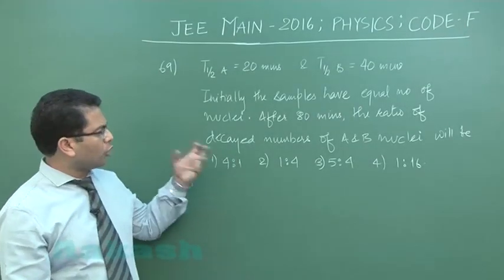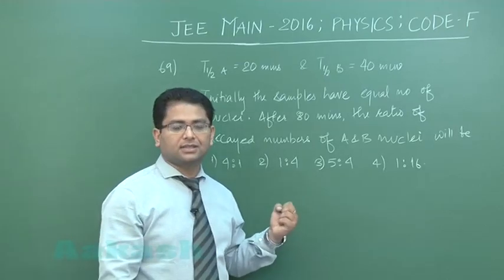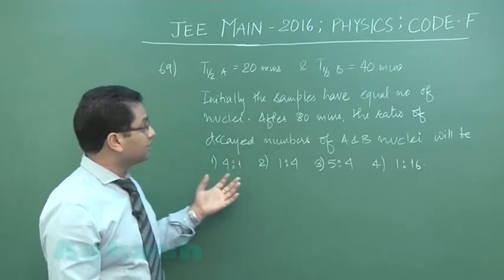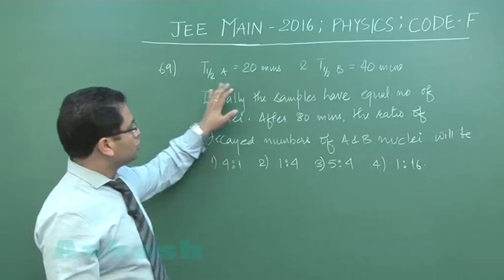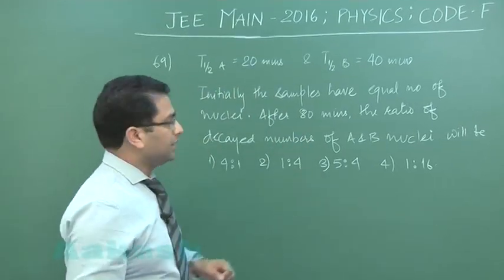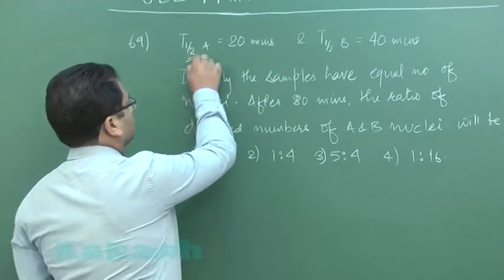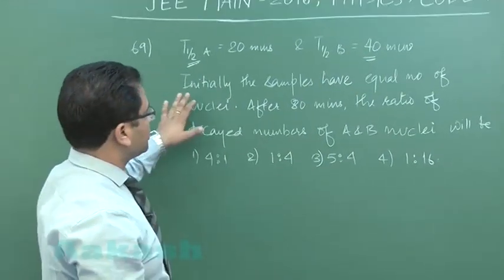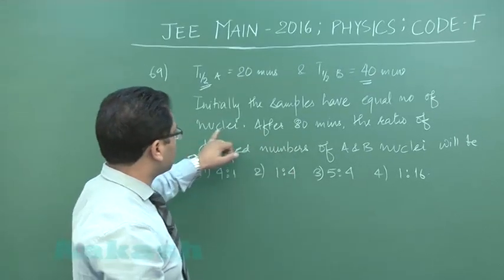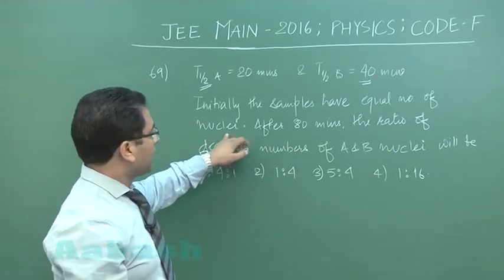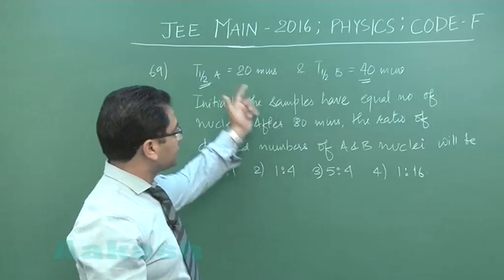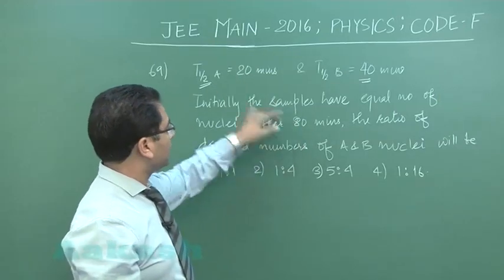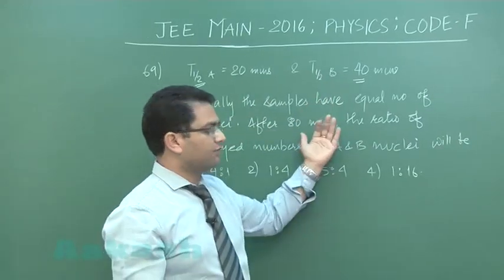Alright, another almost direct formula-based question from radioactivity. There are two radioactive elements A and B, and the half-lives of these are 20 and 40 minutes respectively. Initially these samples have equal number of nuclei. After 80 minutes, that means that would be four times half-life of A and two times half-life of B.